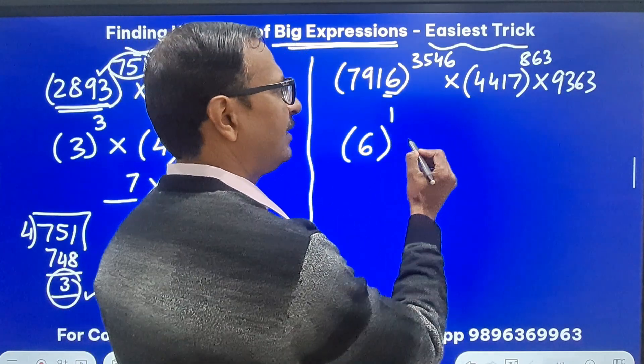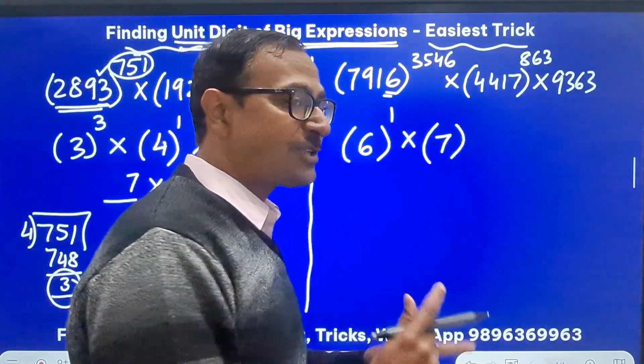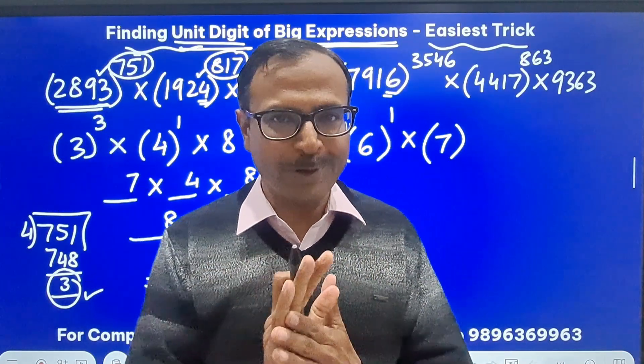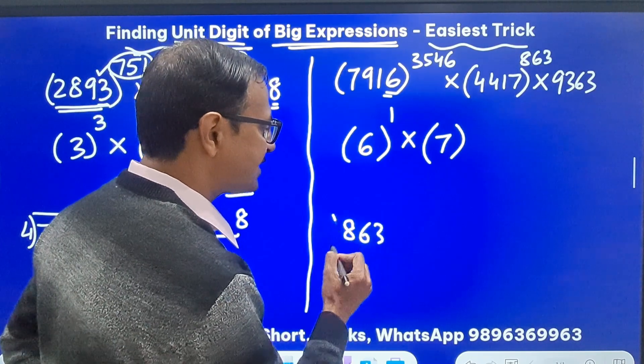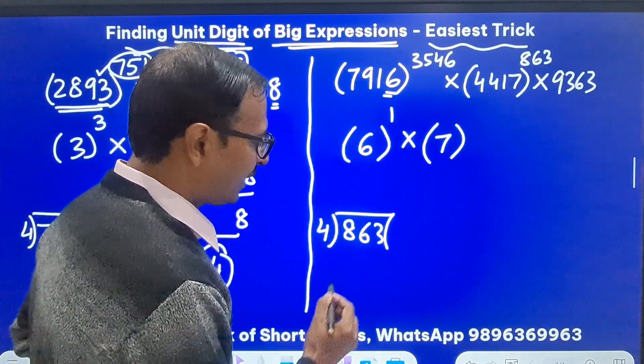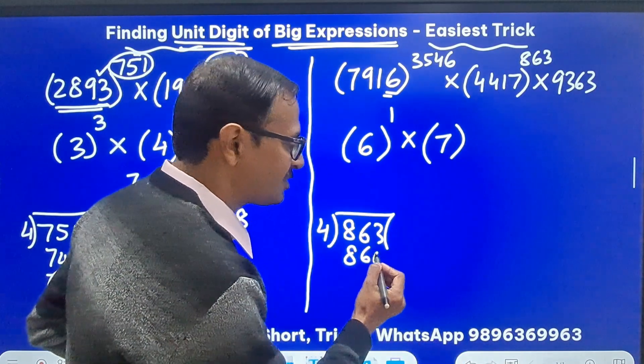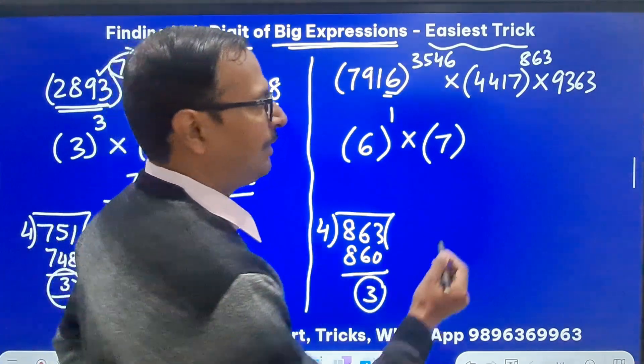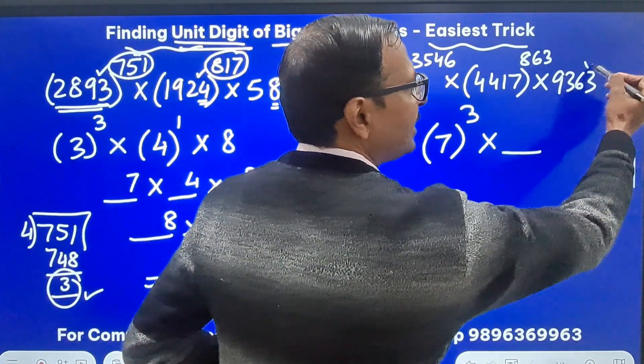So just write 1 and here we have 7. Now for 7 we have a different rule just like we had the rule for 3 divisibility by 4 right. So 863. Now if I divide 863 by 4, 800 is divisible by 4, 60 is also divisible by 4. So I will have a 3 as the remainder. So I will write 3 as the exponent and then this ends in 3.